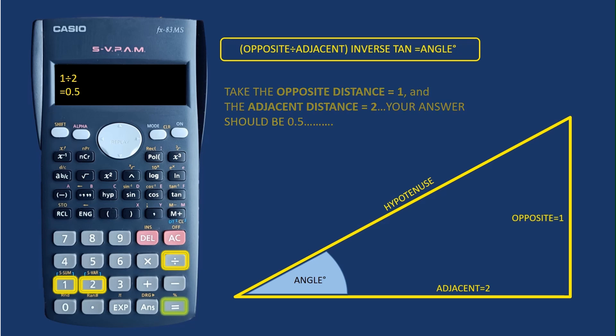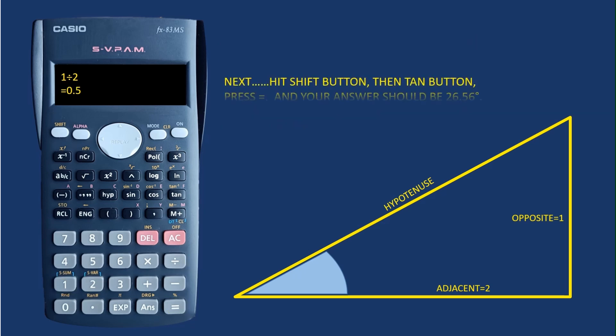With that answer on the screen, continue with the formula by hitting the shift button on the top left corner of the calculator, then hit the tan button highlighted there on the calculator, and then hit equals. Your angle should be 26.56 degrees.